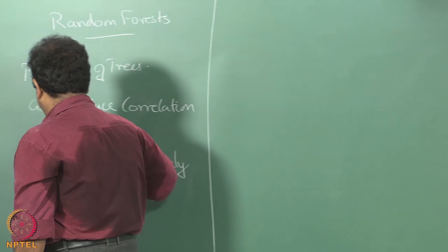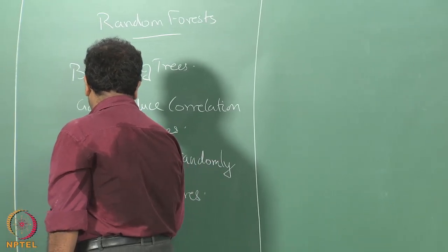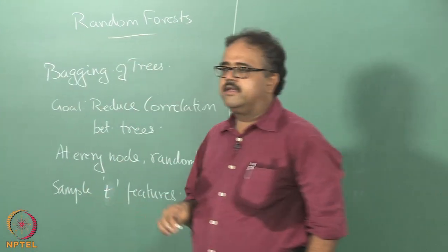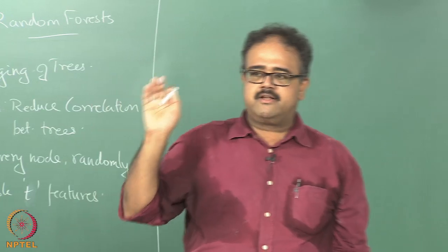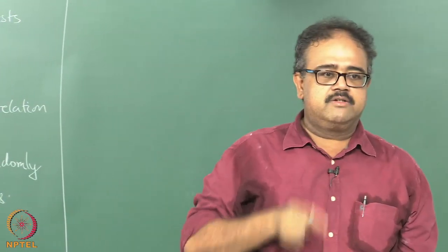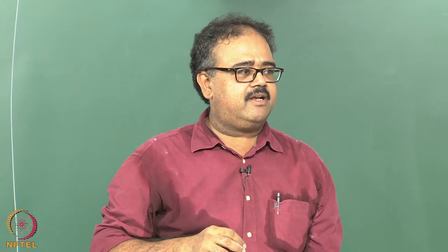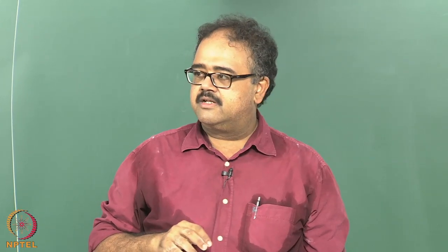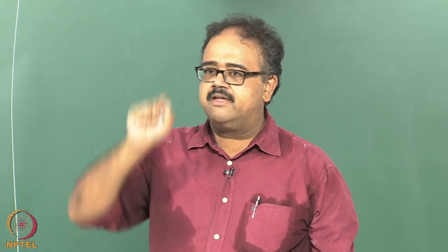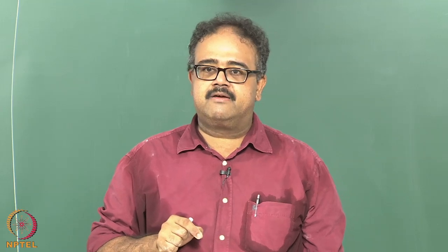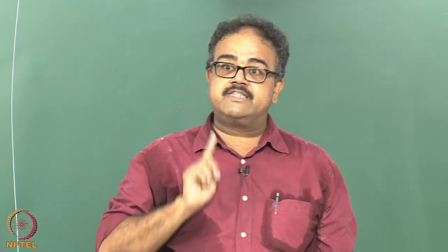You have total of p features. Your data points come from some R^p space. You randomly sample some t features from that p features. Find out which is the best split point, which is the best split variable among these t features alone.